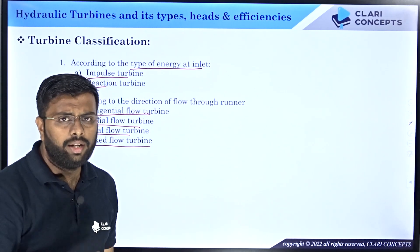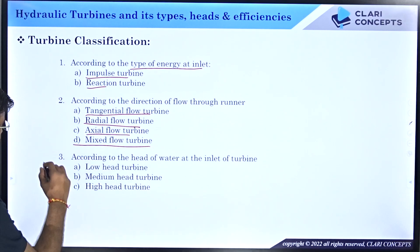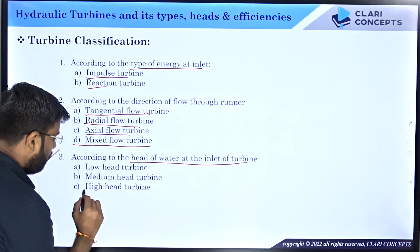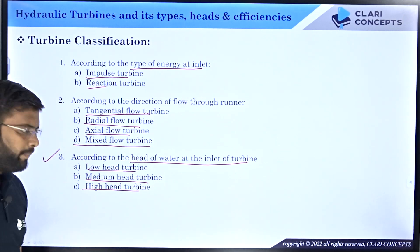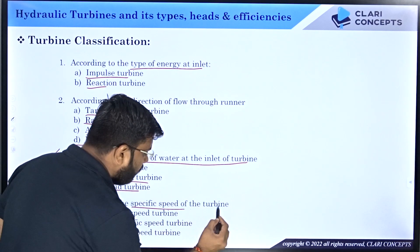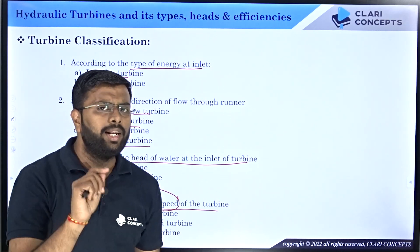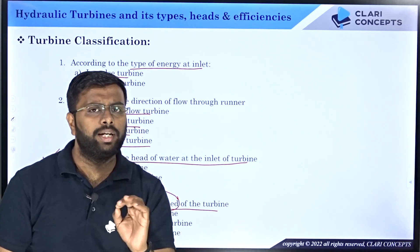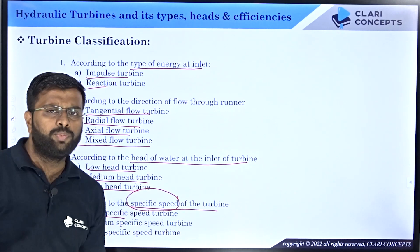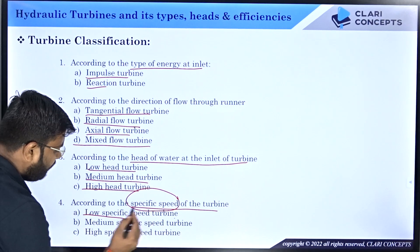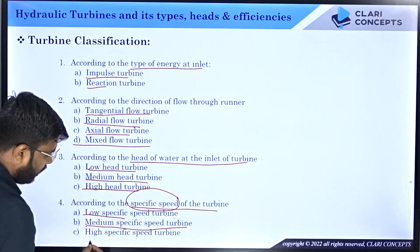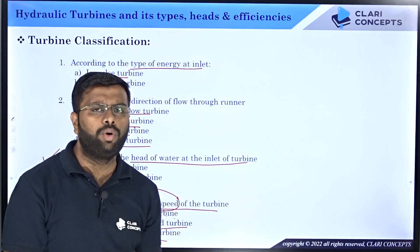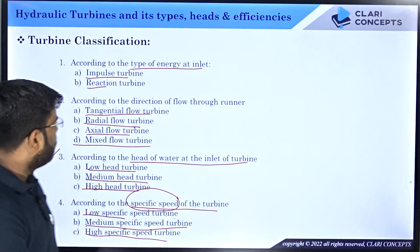The third classification is according to the head of water available at the turbine inlet: Pelton is a high head turbine, Francis is a medium head turbine, and Kaplan is a low head turbine. The fourth classification is according to specific speed. Specific speed relates to the best performance of a turbine. Pelton gives its best performance at low specific speed, Francis operates at medium specific speed, and Kaplan at high specific speed. We will cover specific speed in a dedicated lecture.